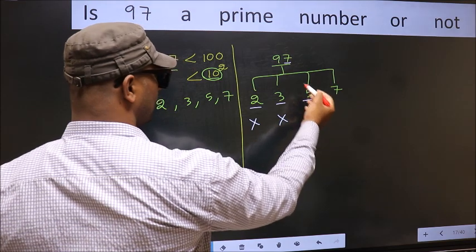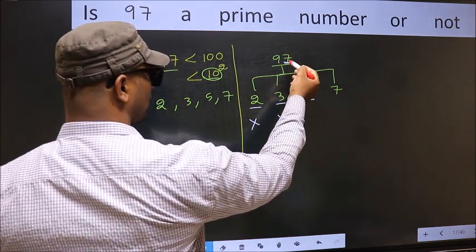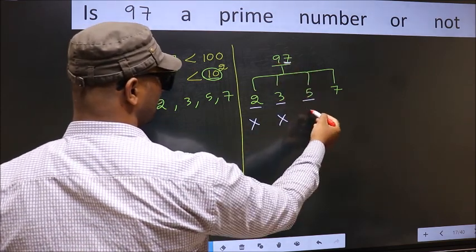Next, number 5. Last digit is neither 0 nor 5. So, this is not divisible by 5.